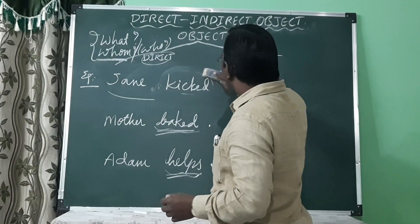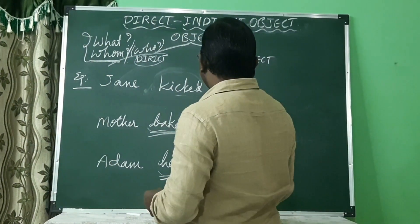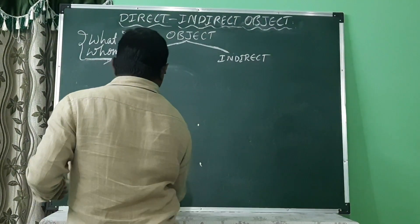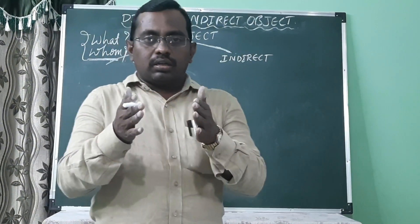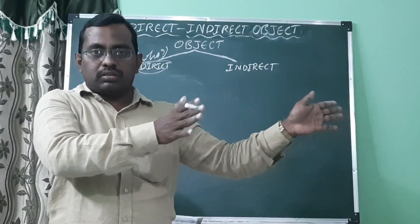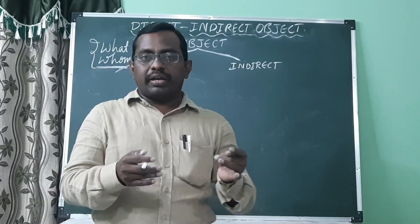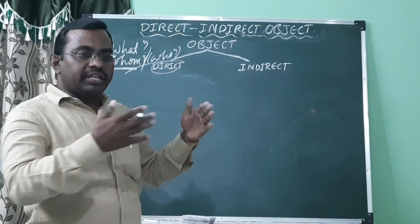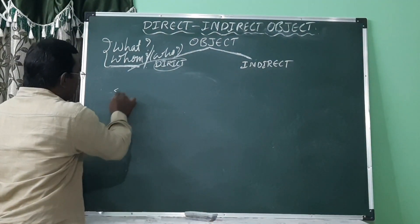Now let us see what is an indirect object and how to identify it. An indirect object is something that gets the direct object — it is the recipient of the direct object. It receives or gets the direct object.